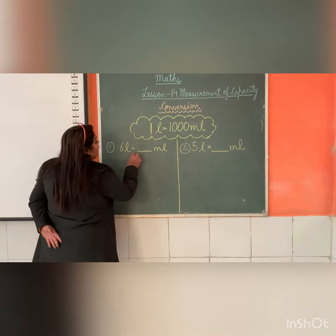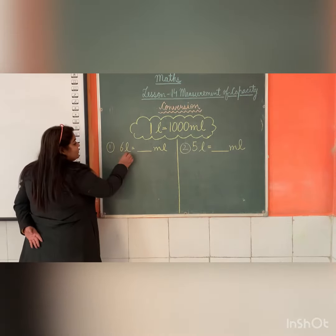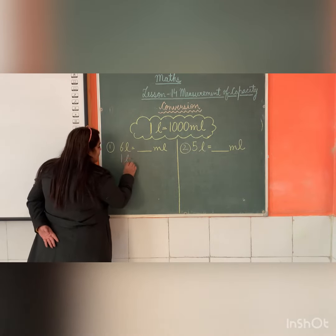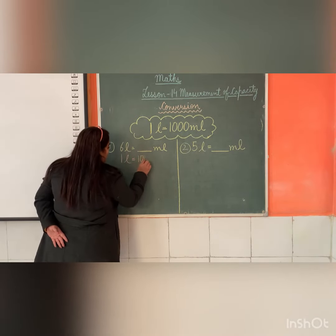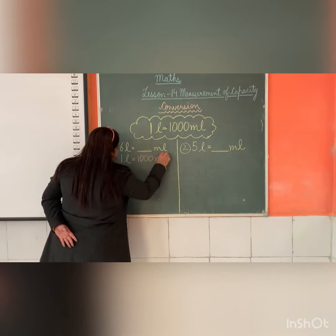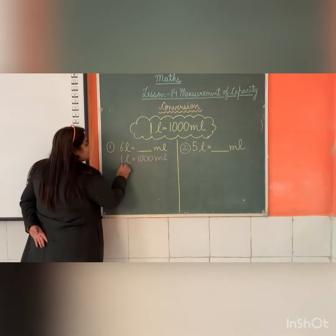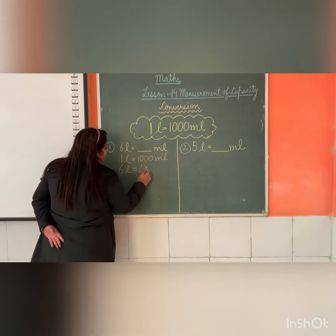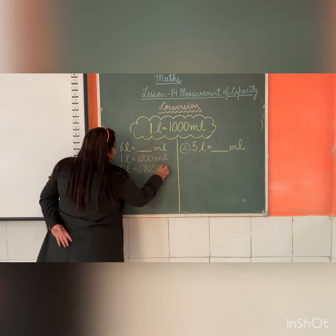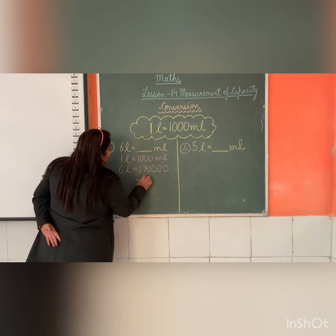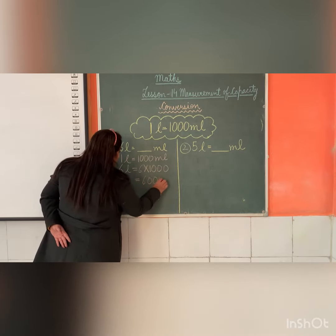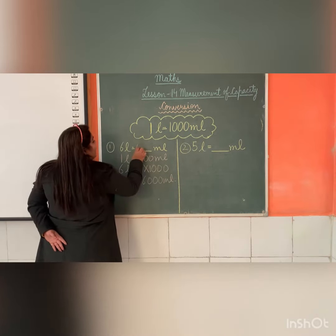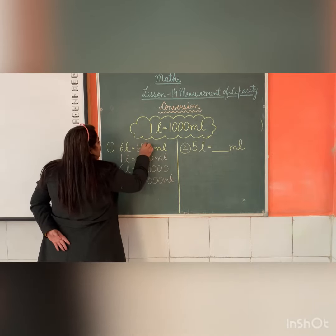See kids, we have given 6 litres. We know 1 litre is equal to 1000 milliliter, so 6 litres equals 6 multiplied by 1000, that is 6000 milliliter. So this is our answer: 6000.